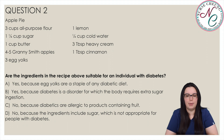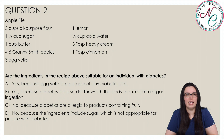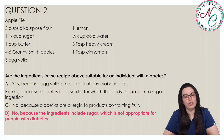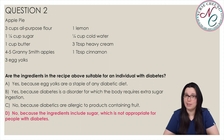Are the ingredients in the recipe above suitable for an individual with diabetes? The correct answer is D: No, because the ingredients include sugar, which is not appropriate for people with diabetes. Diabetics produce insufficient insulin to break down sugar, so their sugar intake should be limited. The apple pie recipe calls for one and one-fourth cup of sugar, which would not be suitable for a diabetic.